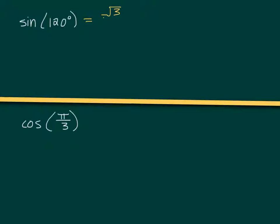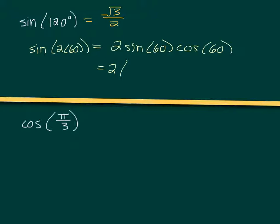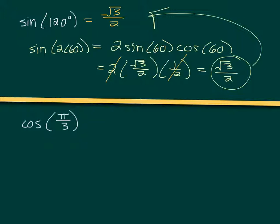We should all be aware that the sine of 120 degrees is root 3 over 2. But we could use our double angle formula to get there as well. We could say this is the sine of 2 times 60, which is 2 times the sine of 60 times the cosine of 60. So, we get 2 times root 3 over 2 times 1 half. What is 2 times 1 half? 1. So, we get 1 times root 3 over 2, which is root 3 over 2. Same thing, as it should be.